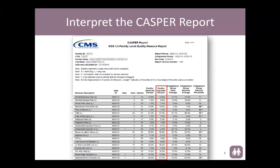The facility adjusted percentage can be case mix adjusted, and you will notice in some instances the number is different than the facility observed percentage. For example, looking at moderate to severe pain long stay, the facility observed percentage is 7.4% while the facility adjusted percentage is 8.8%. Whether it's up or down, this indicates your residents are slightly different than expected given your case mix. If adjusted up, more residents are experiencing moderate to severe pain than would be expected; if adjusted down, you're managing pain for your patient mix better than would be expected.